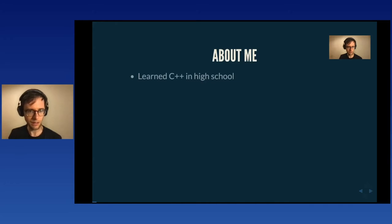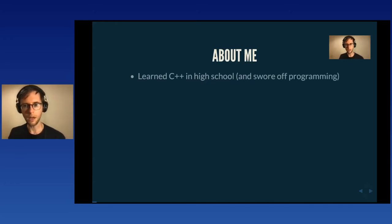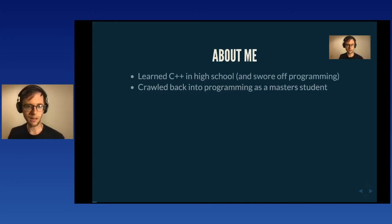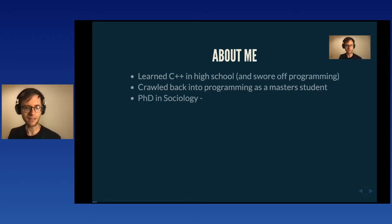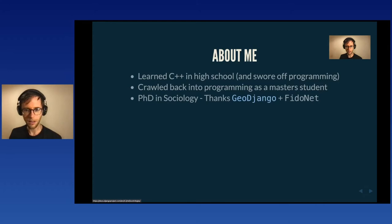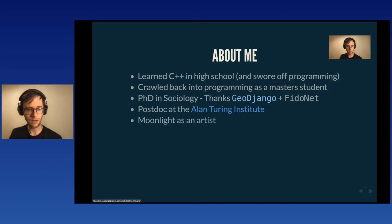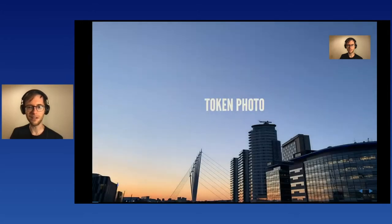Just a bit about me: I was taught C++ in high school but swore off programming. I crawled back in as a master's student on a project which eventually became my PhD in sociology on how a community called Fidonet changed geographically over time, and the GeoDjango project was absolutely crucial for that. I am now very privileged to be a postdoc at the Alan Turing Institute, but I also work as an artist in theater, film, jazz jams, and photography.